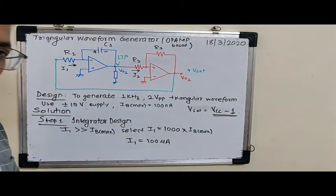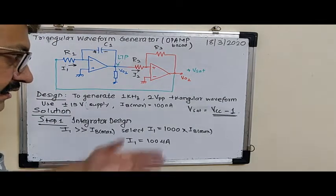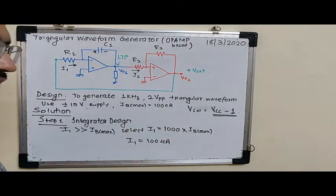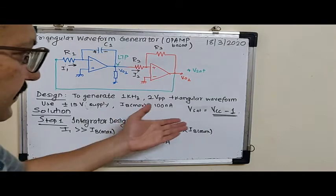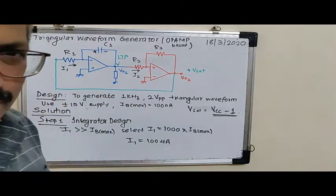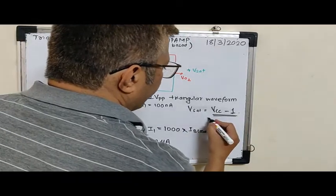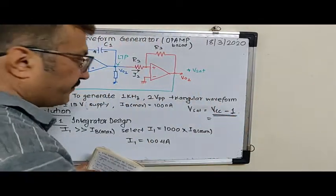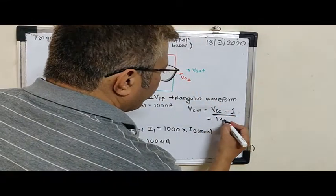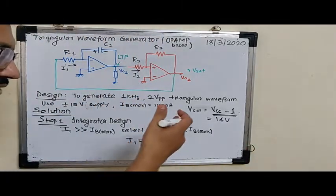This is one valid design assumption. Generally it turns out to be nearly about 11.5 volts. So Vsat we are taking as Vcc minus 1, Vcc being 15 volts, my Vsat will be 14 volts. Otherwise standard practice is Vsat equals 90% of Vcc. We will use this assumption.